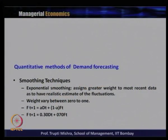Taking an example, f_{t+1} = 0.30·d_t + 0.70·f_t. Here the forecast for t+1 comes more from the forecasted demand for the present time period — 70 percent comes from the forecasted demand for the present time period t, and 30 percent from the actual demand for the rest of the time period. So for future forecasting of demand at t+1, 70 percent weightage is given to the forecasted demand at time period t.